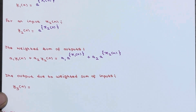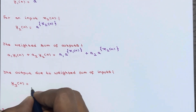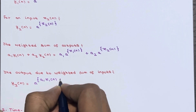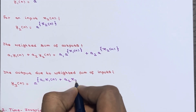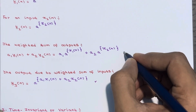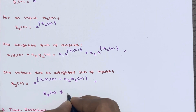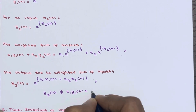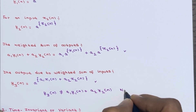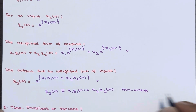Now we calculate the output due to the weighted sum of inputs, y3(n). This becomes a^(a1·x1(n) + a2·x2(n)). Comparing this with the weighted sum of outputs: these two are not equal. So y3(n) ≠ a1·y1(n) + a2·y2(n), which means our system is a non-linear system.